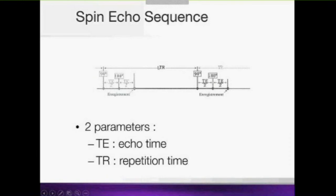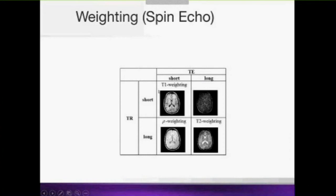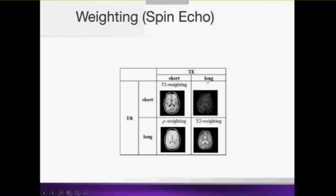This sequence of 90 degrees followed by 180 degrees is separated by a time called the TR, the repetition time. The time from the excitation to the echo is called the TE, the echo time. Both TE and TR can be set on the scanner. Simply by changing TE and TR — making them shorter or longer — you can obtain different contrast weightings. With a short TE and short TR you get T1 weighting: white matter appears bright, gray matter gray, and CSF dark. With a short TE and long TR you get proton density weighting, which is less commonly used in clinical practice today.